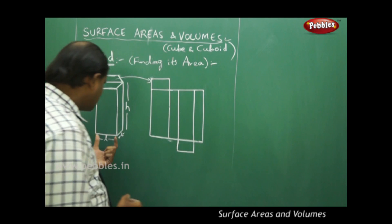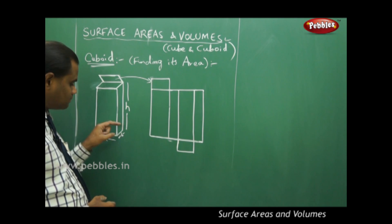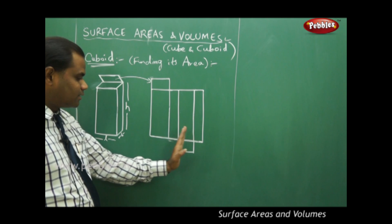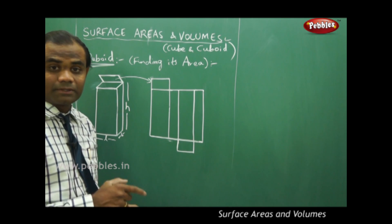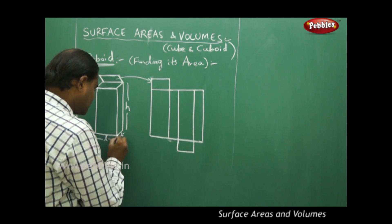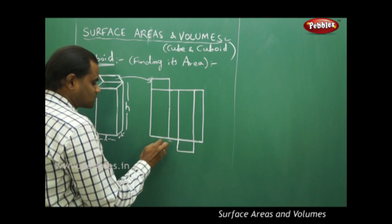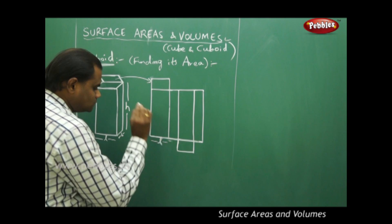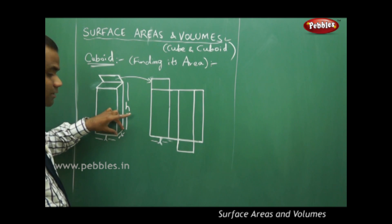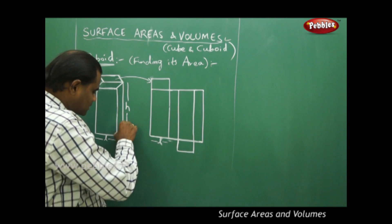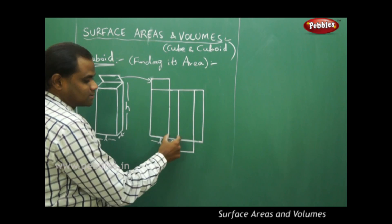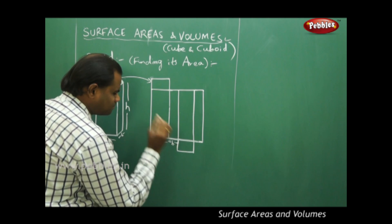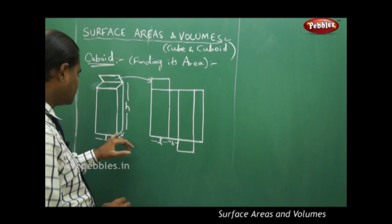The length of the cuboid is L, breadth is B, and height is H. Let's assign dimensions to each region. The front face has length L, so this would also be L. The width is B, and because this side face is just a strip, its dimension is B.